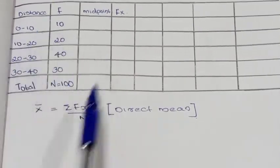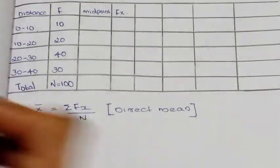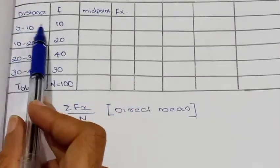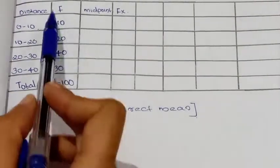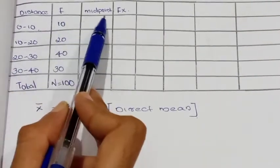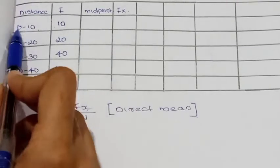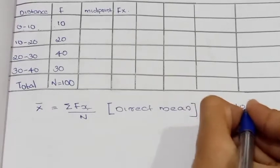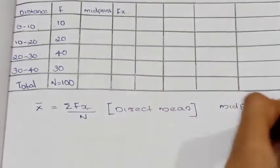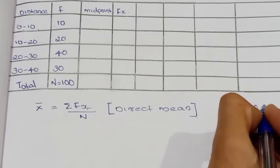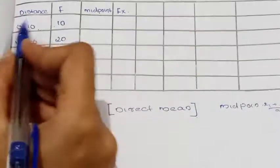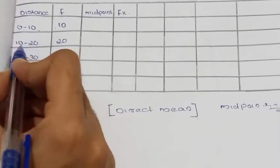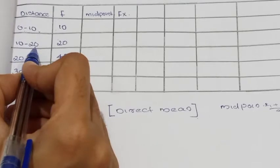The class interval midpoint is calculated as x1 plus x2 divided by 2. So 0 to 10 gives 0 plus 10 divided by 2. Then 10 to 20 gives 10 plus 20 equals 30 divided by 2.